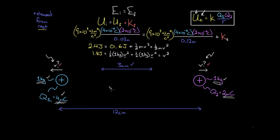Calculating: 2.4 joules initial electrical potential energy minus 0.6 joules final electrical potential energy leaves 1.8 joules, which equals v-squared (since the two one-half mv-squared terms combine to v-squared with m = 1 kg). Taking the square root of 1.8 joules per kilogram gives 1.3 meters per second. That's how fast these charges are moving after they've reached 12 centimeters apart. Conceptually, potential energy was turning into kinetic energy — the final potential energy was less than the initial, and all that energy went into the kinetic energies of the charges.